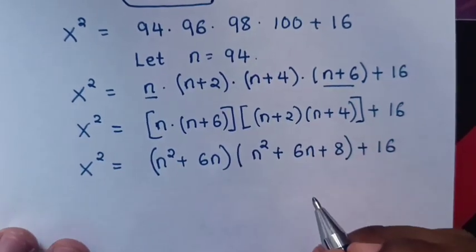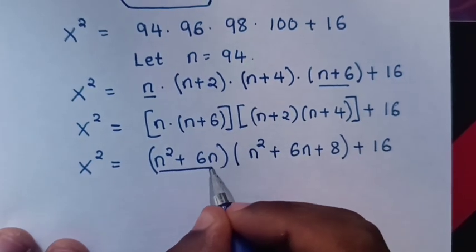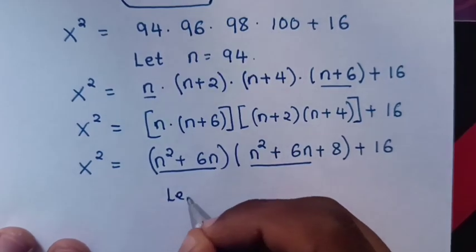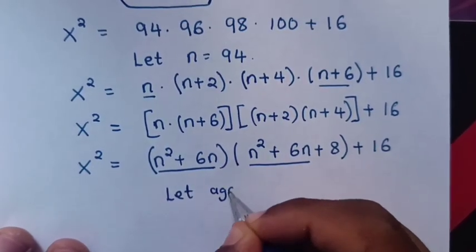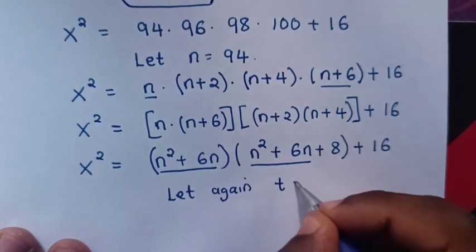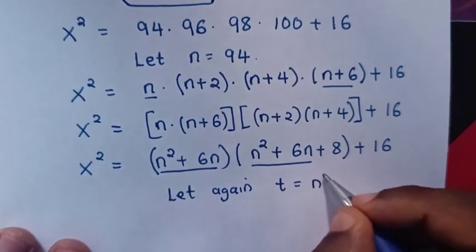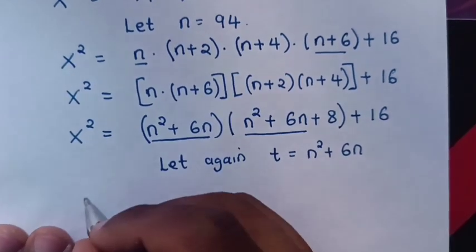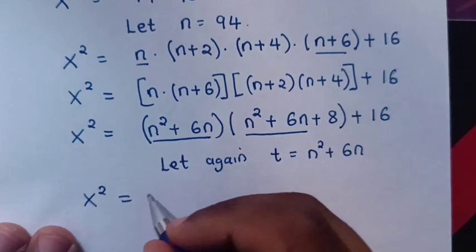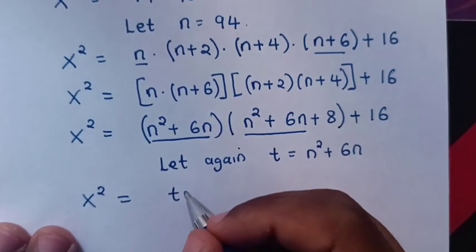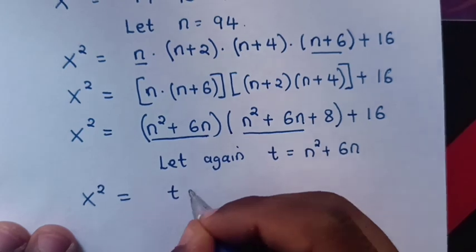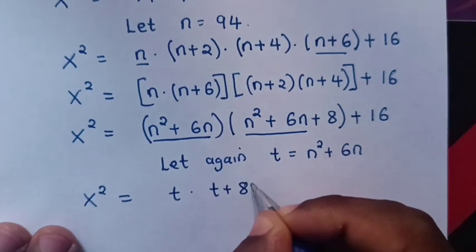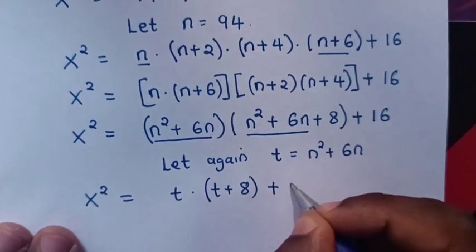Now, you can see that n squared plus 6n is common. So we let t equal to n squared plus 6n. Then x squared is equal to t times (t plus 8) plus 16.